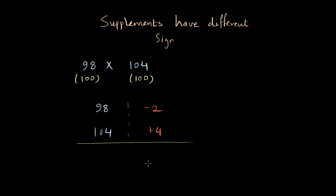The result that we are going to get has two parts to it: one part is combining the supplement and the other number, the other part is the multiplication of the supplements. Let's first take the combination of a supplement and the opposite number.